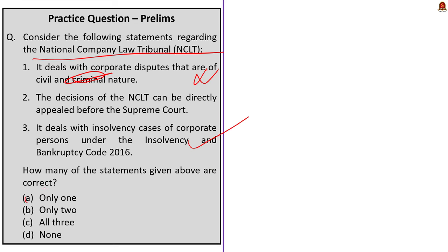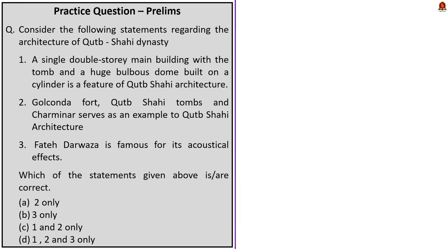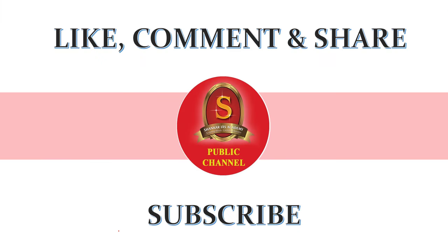The final question is about the Qutb Shahi dynasty, with three statements. All three statements are correct, so the correct answer is option D: 1, 2, and 3. With this we have come to the end of the news article discussion. If you liked the video, please hit like, do comment, and don't forget to subscribe to Shankar IAS Academy's YouTube channel. Thank you so much for listening.